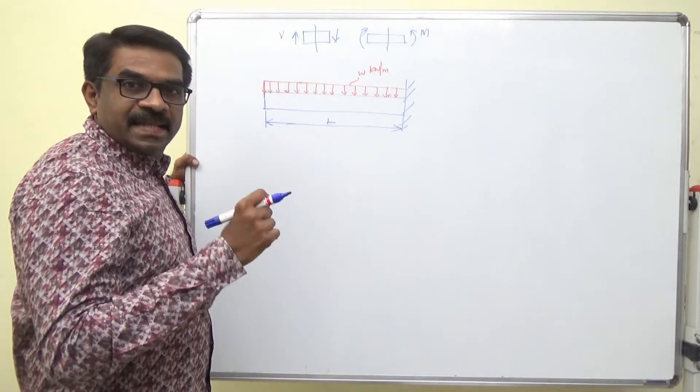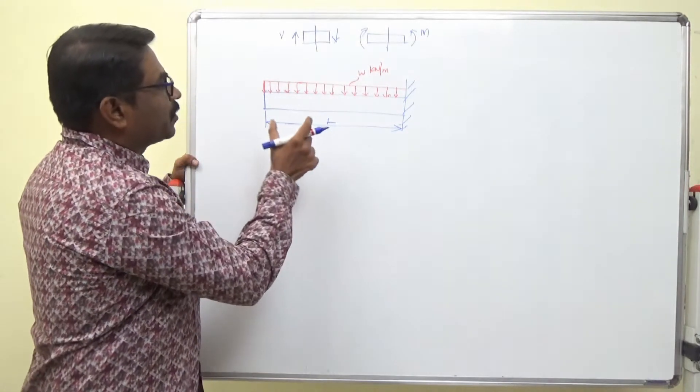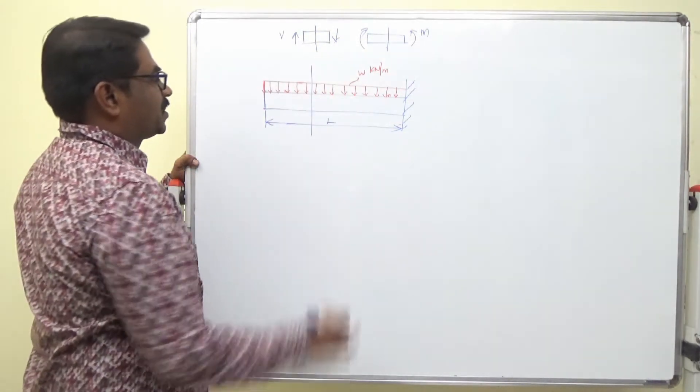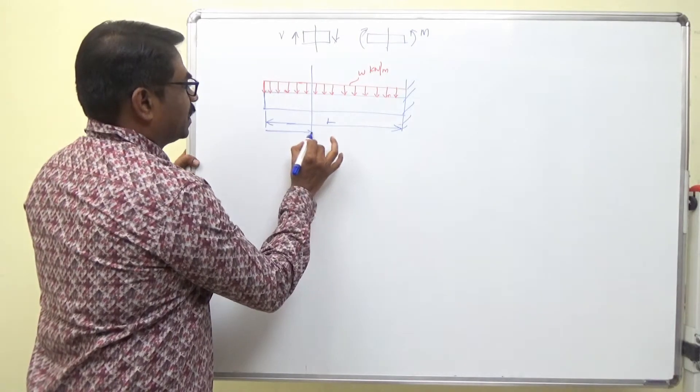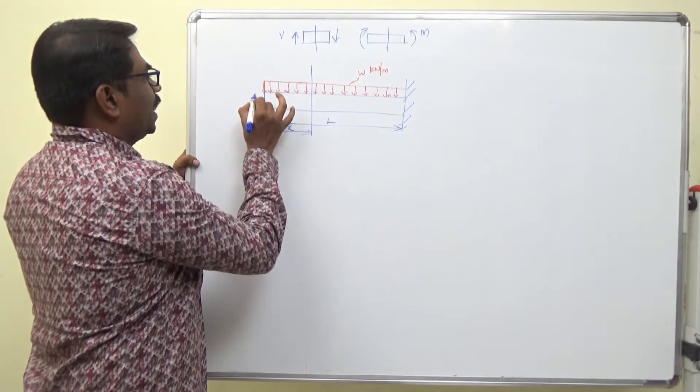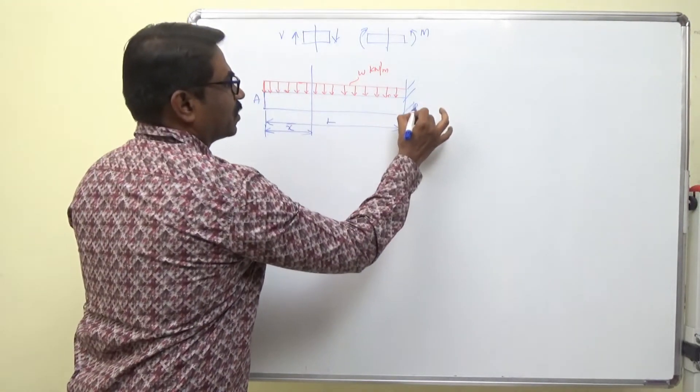The method is the same. Now what I am going to do? I am going to take a section x distance from free end. I call it A and call it B.